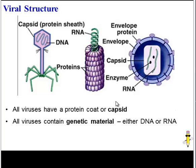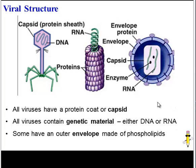Viruses also contain genetic material, either DNA or RNA, not both. And some viruses, particularly animal viruses, have an outer envelope made of phospholipids. That envelope is usually derived from the cell that it recently infected.